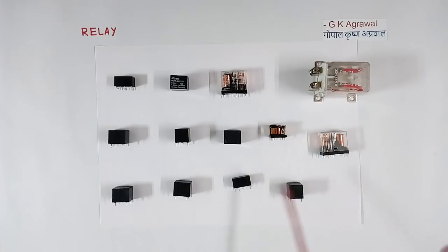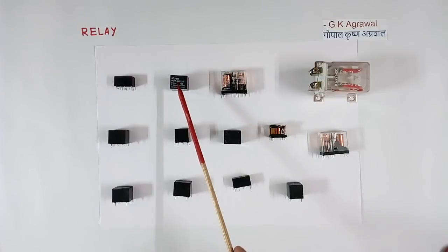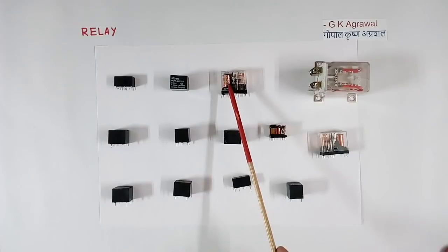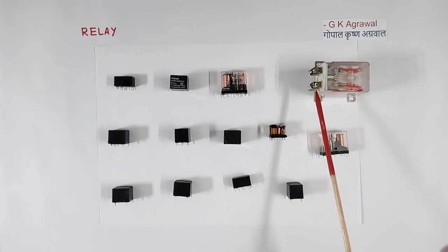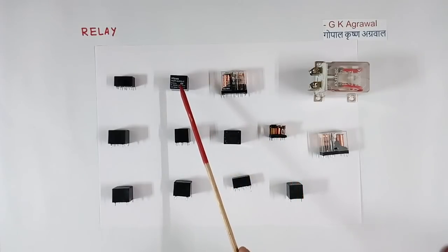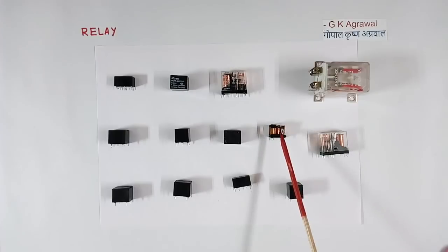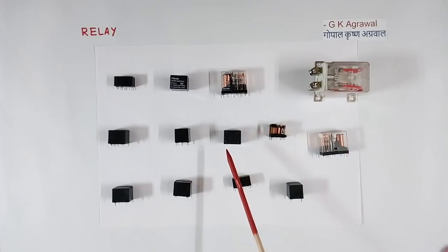Here we have many different relays — some small and some large. The coil rating is different for each: some relays have a coil rating of 5V, some are 12V, and some are 220V. As the voltage gets bigger, the contact capacity can also be higher. You can see the ratings printed on the relay case.